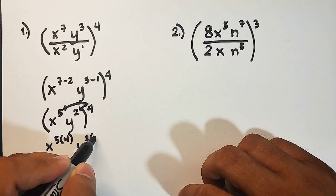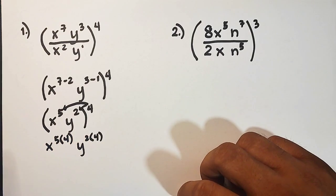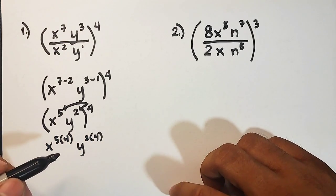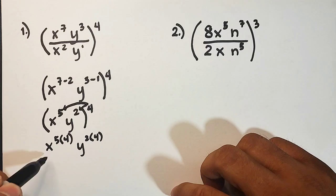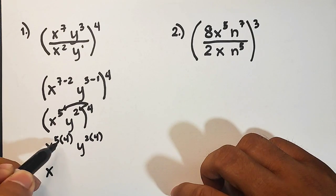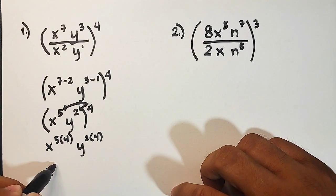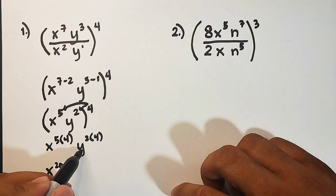raised to 2 times 4, y raised to 8. What I'm showing you is the step-by-step process. So we have your x raised to 5 times 4, which is 20.